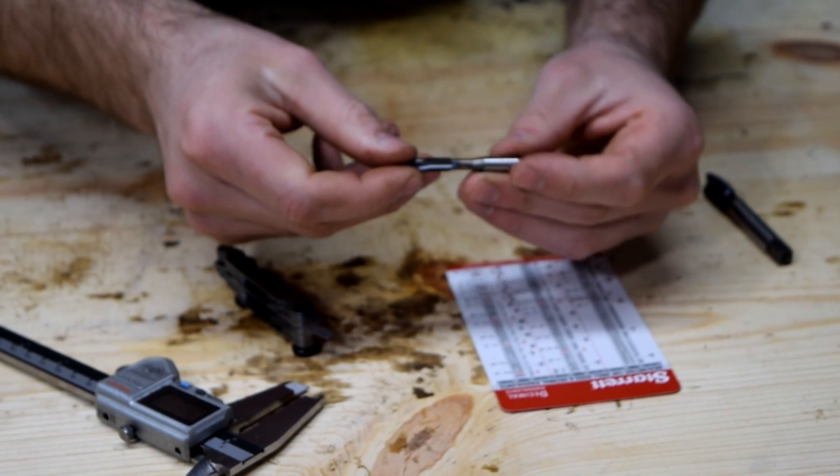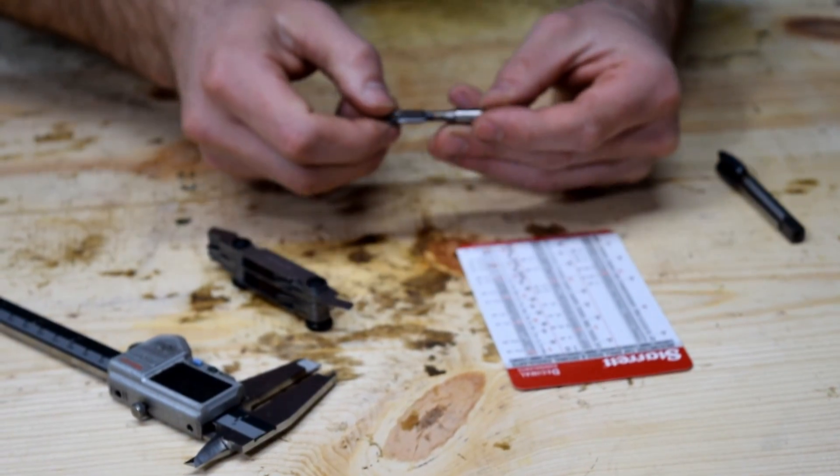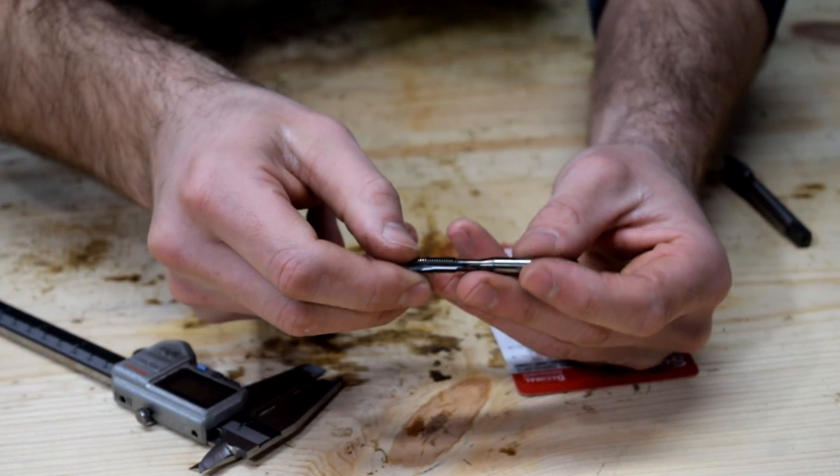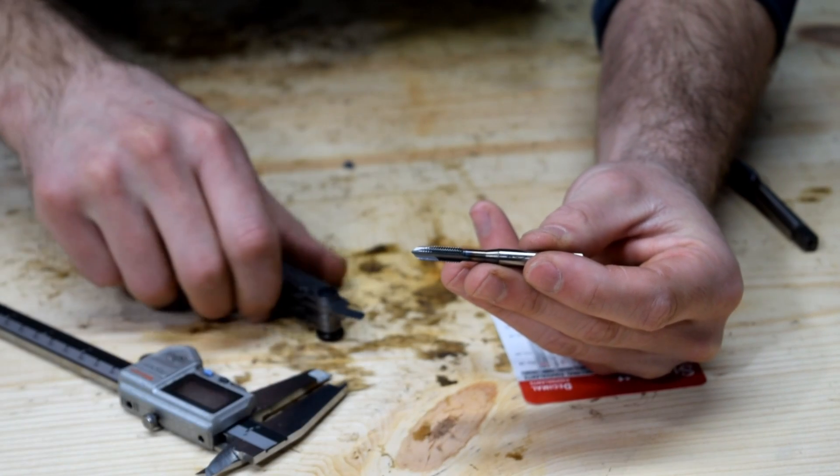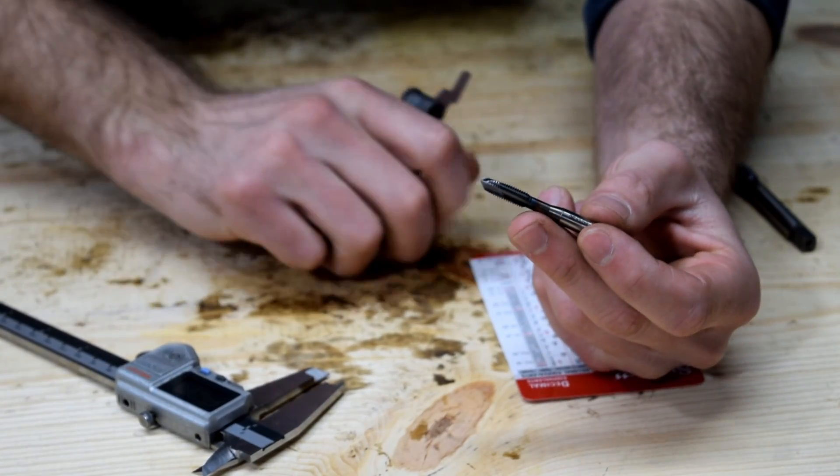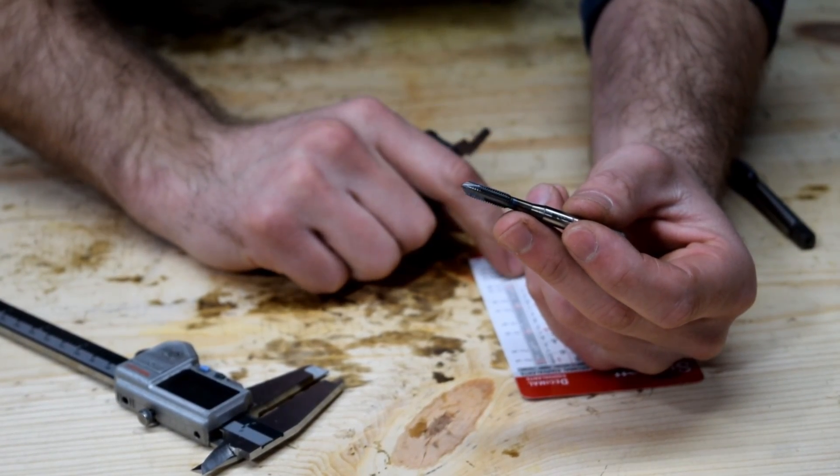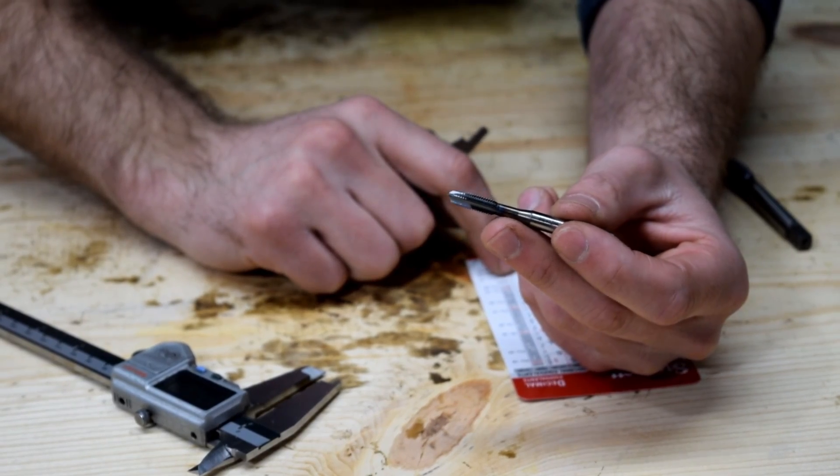And it looks fairly coarse, so I'm guessing it's probably a quarter 20. But you only have two options: quarter 20 and quarter 28 for quarter inch threads.